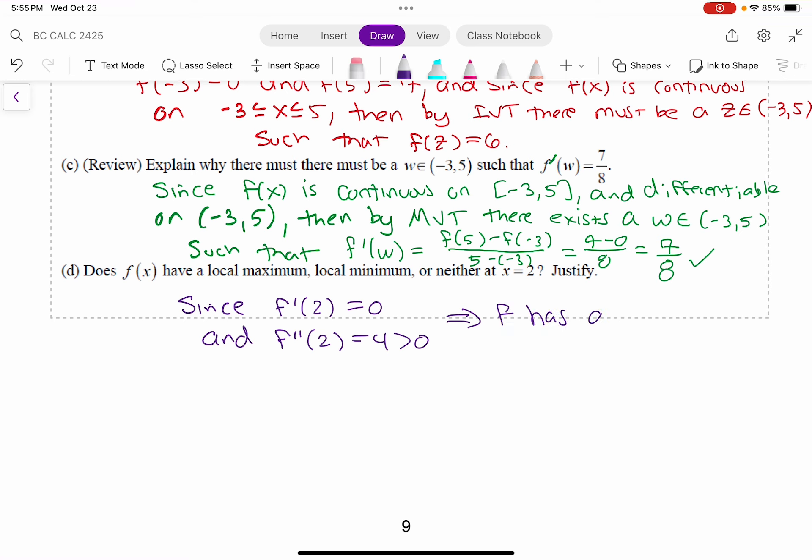so think about it, the f double prime of 2 being positive means it's essentially concave up. So you've got a critical point, concave up, so it has a min, a local min. Okay, and that's by the second derivative test.